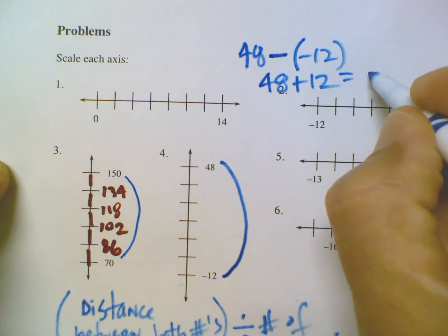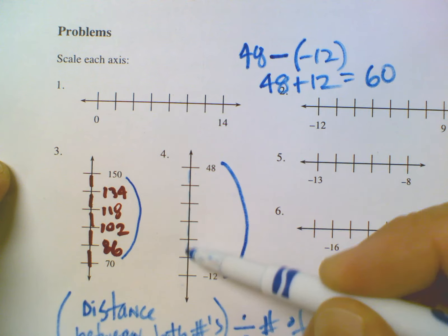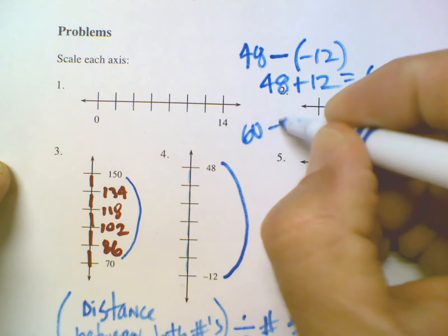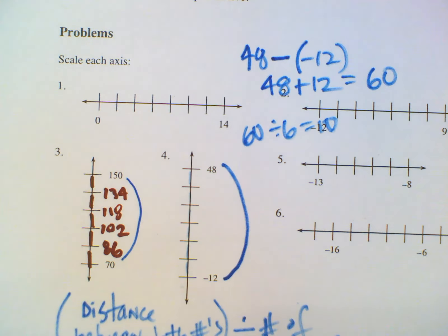Now I look at how many spaces: one, two, three, four, five, six spaces in this case. So I take 60 and divide by six, and I get 10. So 10 is my increments.